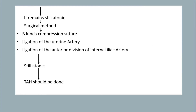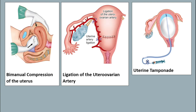If the uterus still remains atonic, surgical methods should be applied such as bimanual compression, sutures, ligation of the uterine artery, ligation of the anterior division of the internal iliac artery. If the uterus is still atonic, total abdominal hysterectomy should be done. These are the pictures showing the surgical procedures.